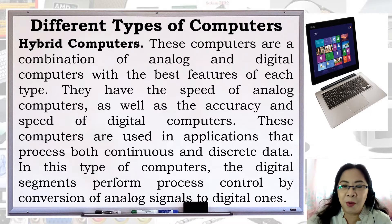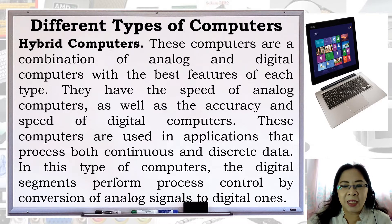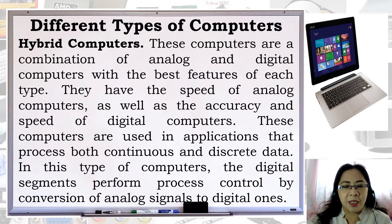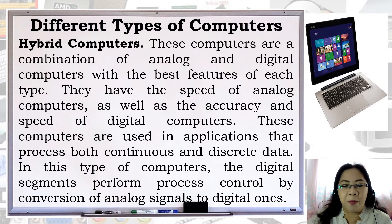Hybrid computers are a combination of analog and digital computers with the best features of each type. They have the speed of analog computers as well as the accuracy of digital computers. These computers are used in applications that process both continuous and discrete data. The digital segments perform process control by conversion of analog signals to digital ones.